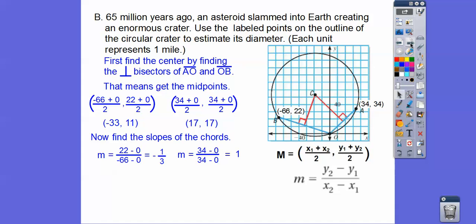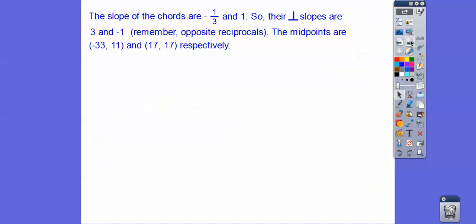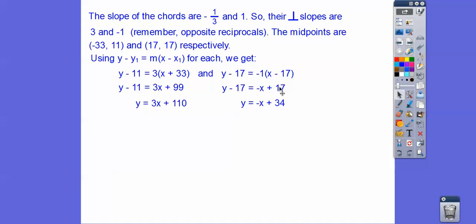The slopes of those chords are negative one third and one. So the perpendicular slopes to be flip it and change the sign. So perpendicular to this is positive three. Perpendicular to this is negative one. So then we're going to put it in there and then get to our equation. So there's the equations of those two perpendicular bisectors.